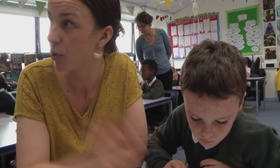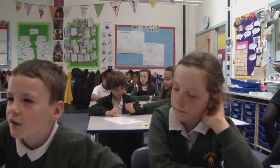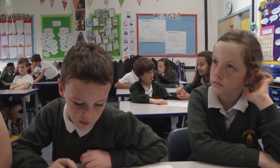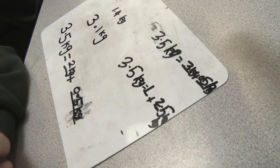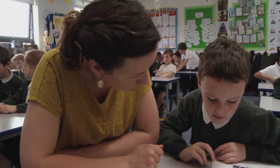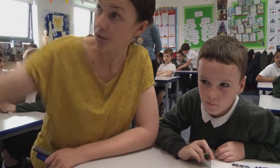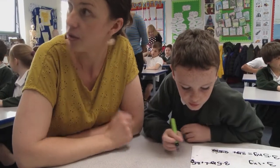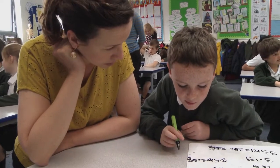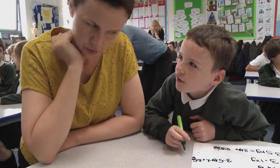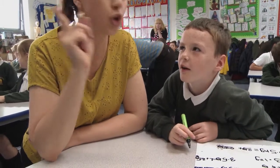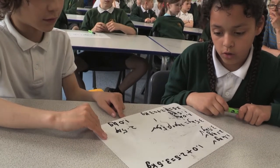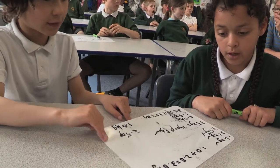So, what does that 1 represent, Callum? There's 1 kilogram. Can you say that? The 1 represents 1 kilogram. Can you see that in the picture, the 1 kilogram? What does the 2 represent? 2 kilograms. Good boy. 1 kilogram plus 2.5 kilograms equals 3.5 kilograms.